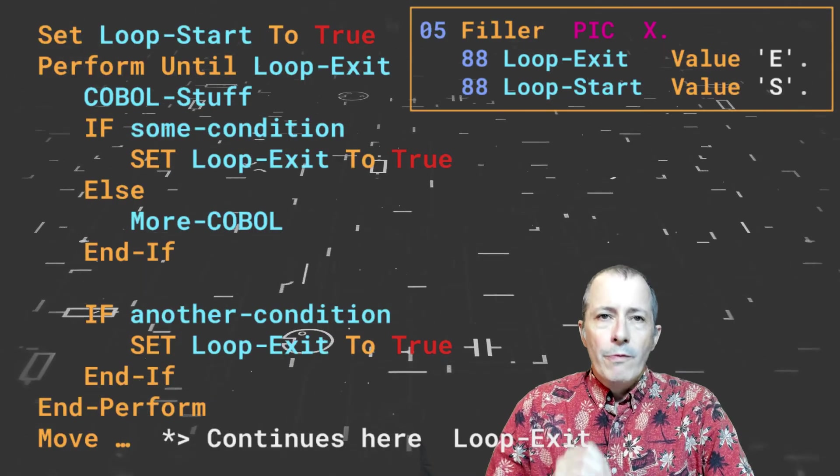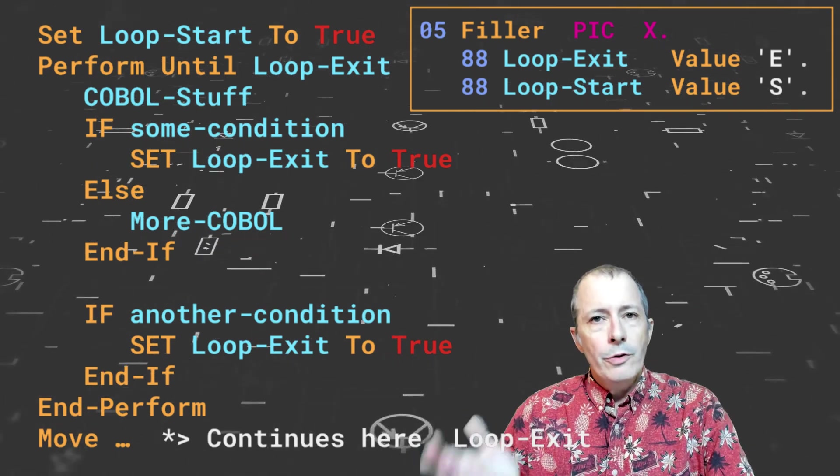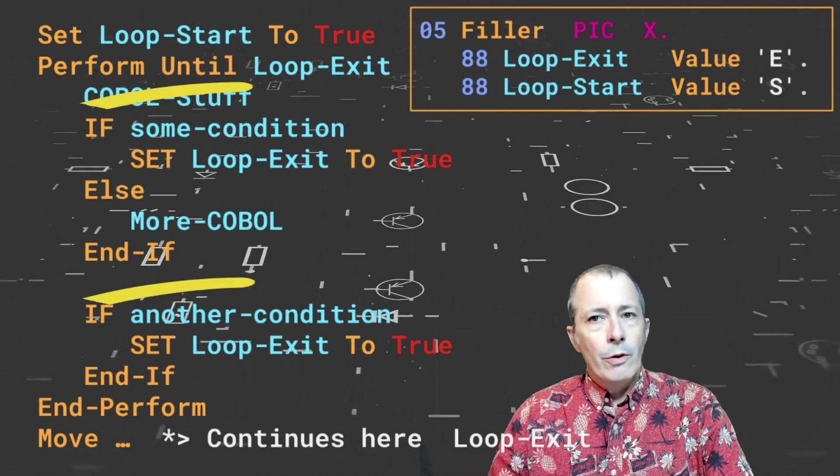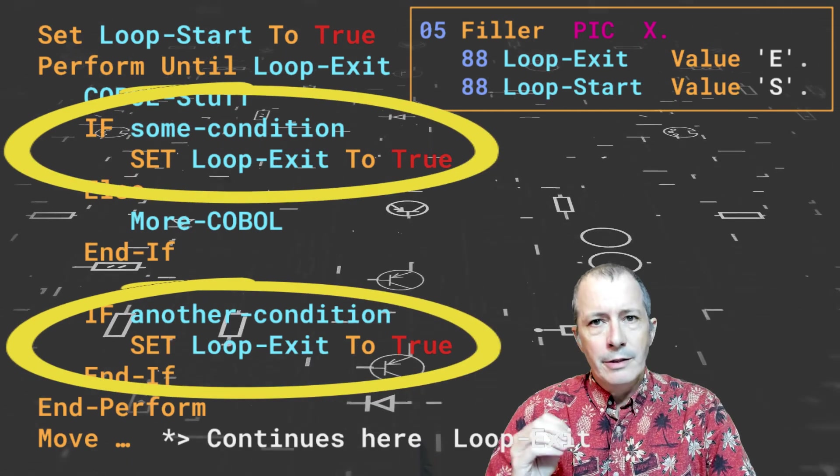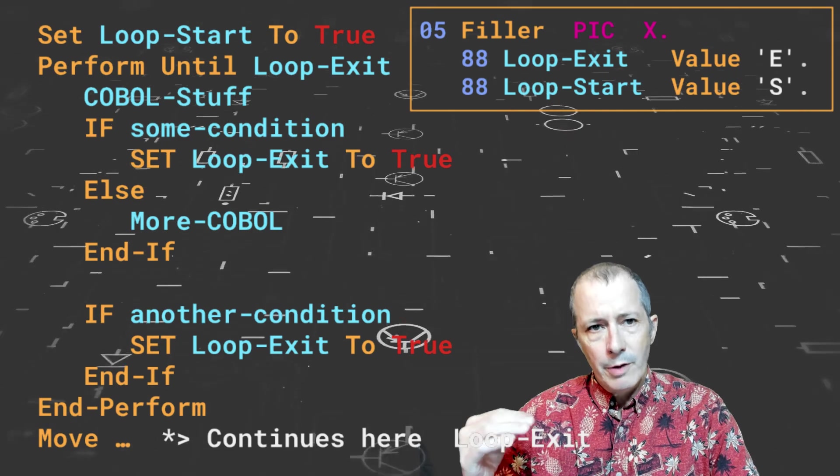Prior to perform until exit, you might have emulated it by using a flag. Consider the following pseudocode. There are two conditions for exit in the loop, and those conditions cannot be evaluated at the same time.